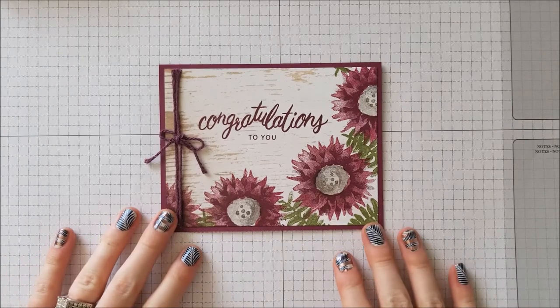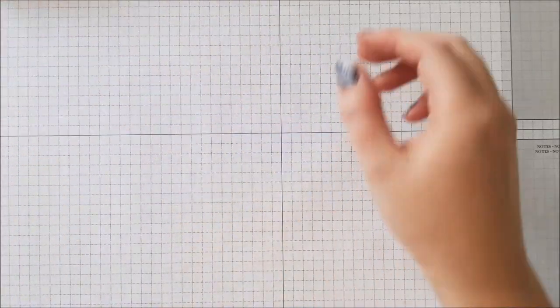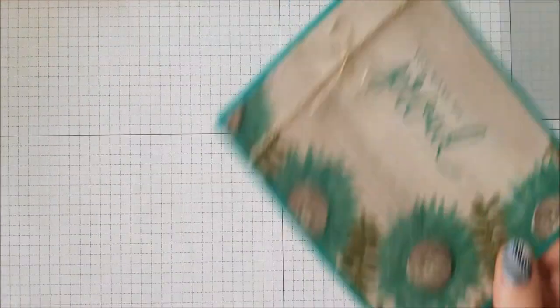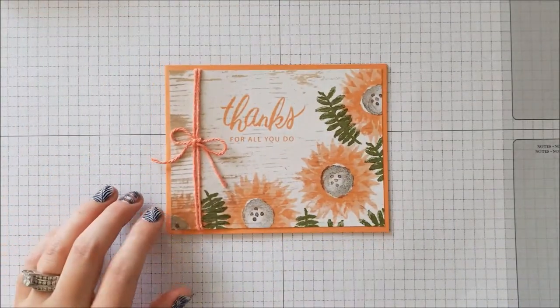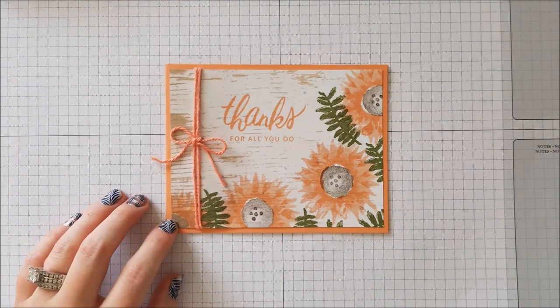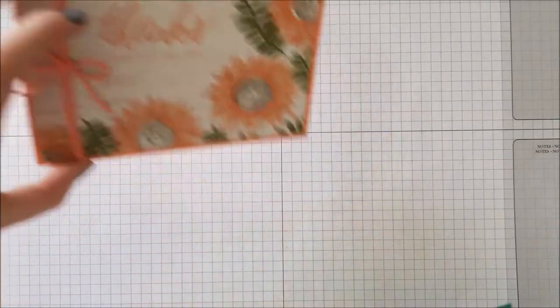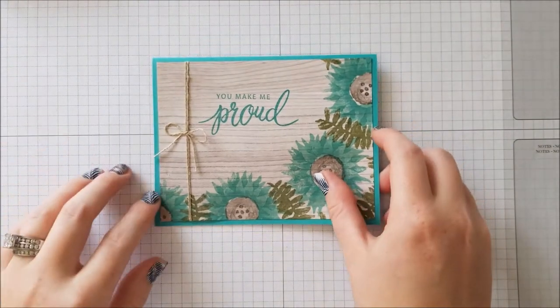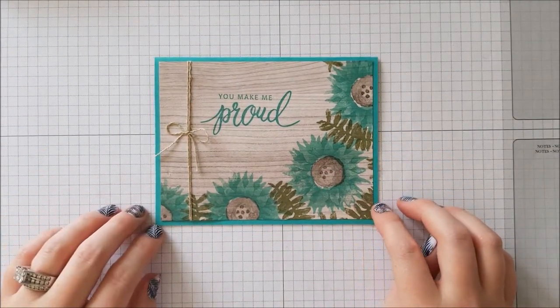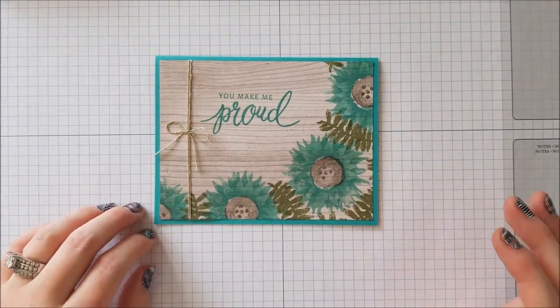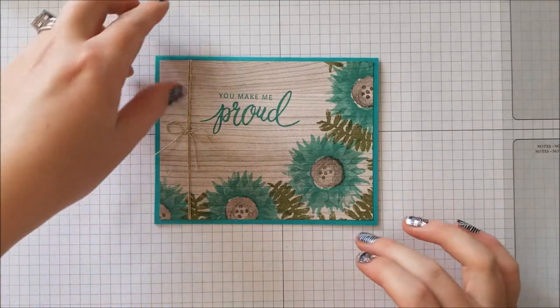So today we're going to do a card with these colors, but I also wanted to show you some of the other colors that we've done. This one was done using Grapefruit Grove, and this one was done using Bermuda Bay. So you can really do a lot of different colors with it, a lot of different sayings. It's really versatile, great for so many different occasions.